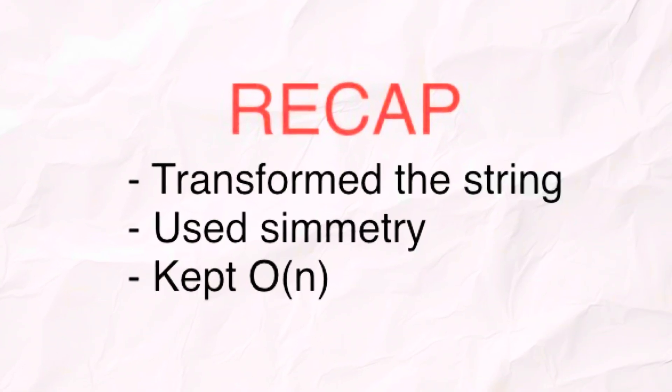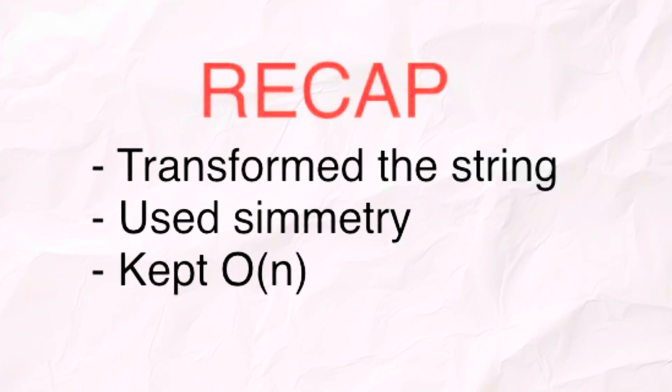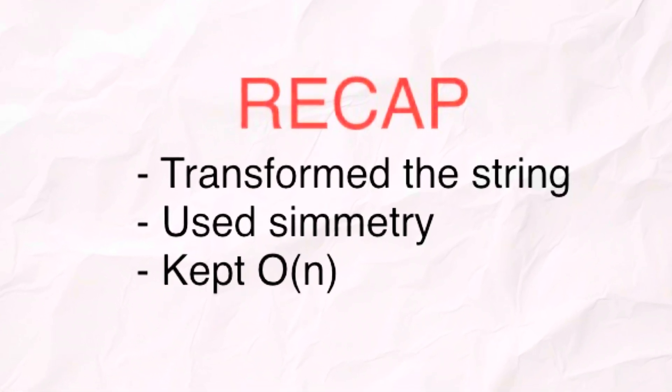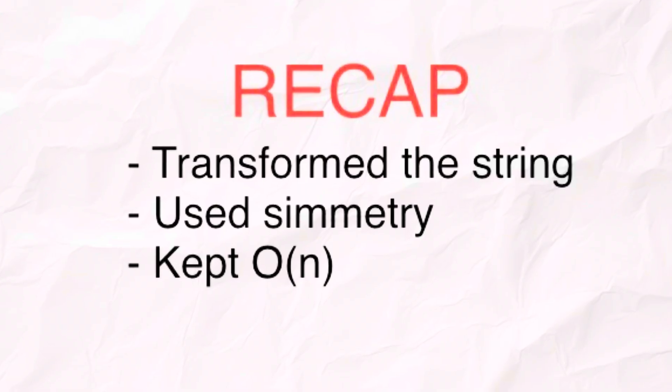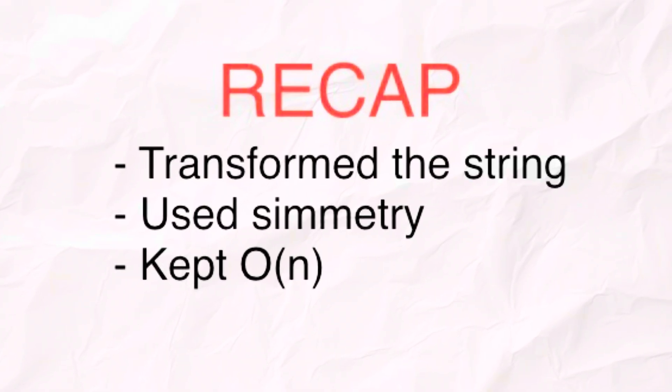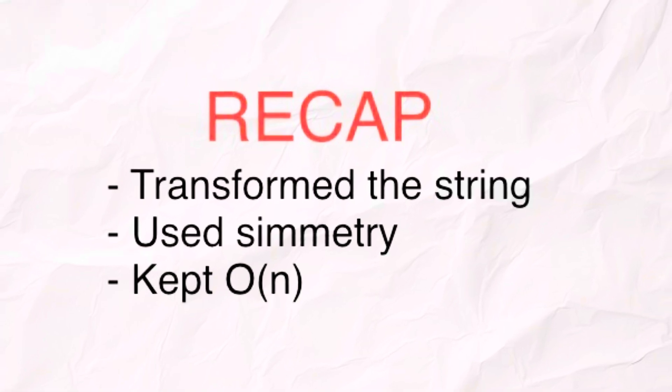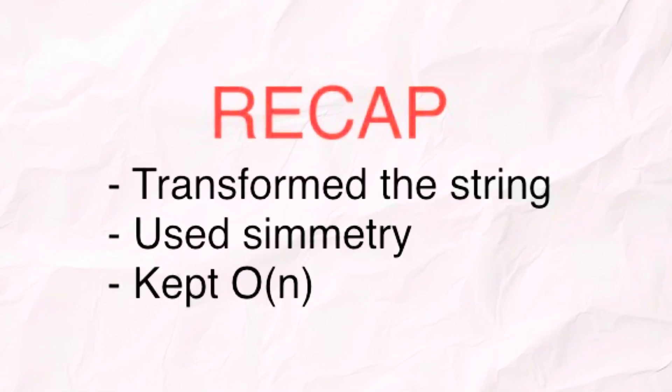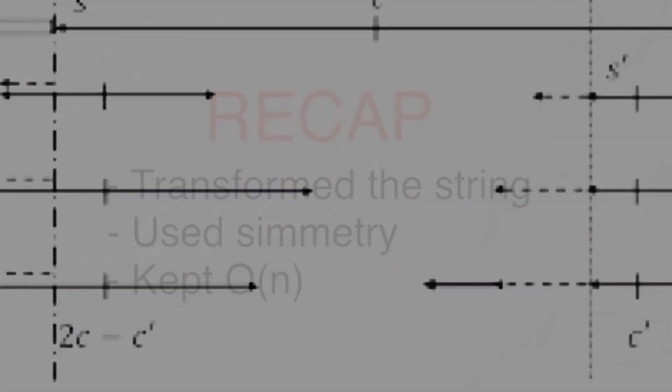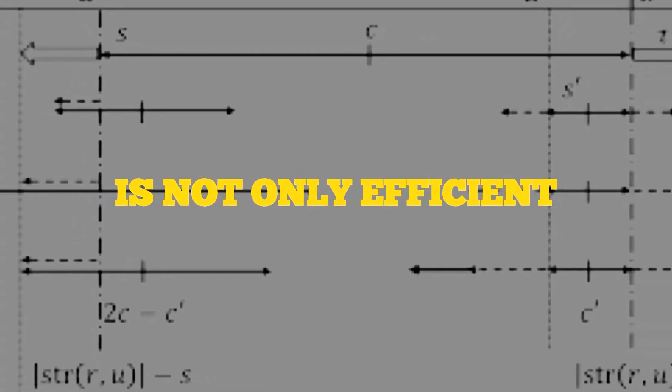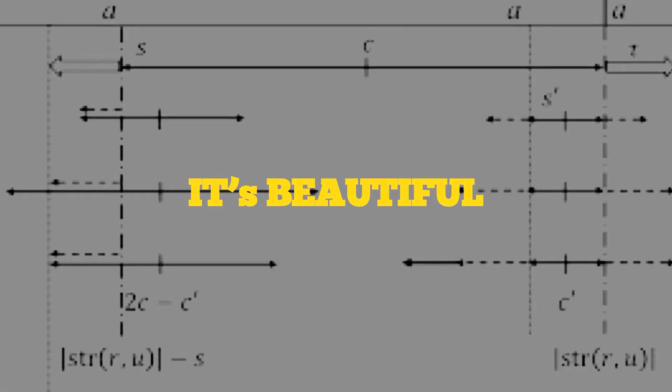So to recap the whole thing, we transformed the string to handle all centers uniformly. We used symmetry and the clever mirror trick to avoid redundant checks. We kept everything in O(n) time thanks to amortized behavior. And to be honest, I think Manacher's algorithm is not only efficient, it's beautiful.